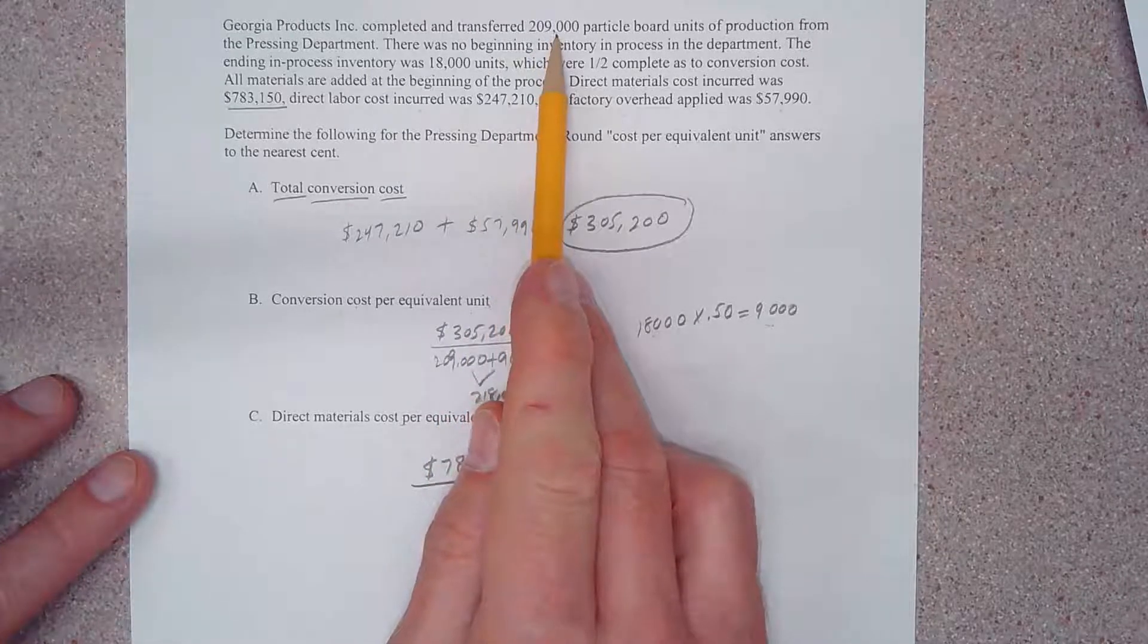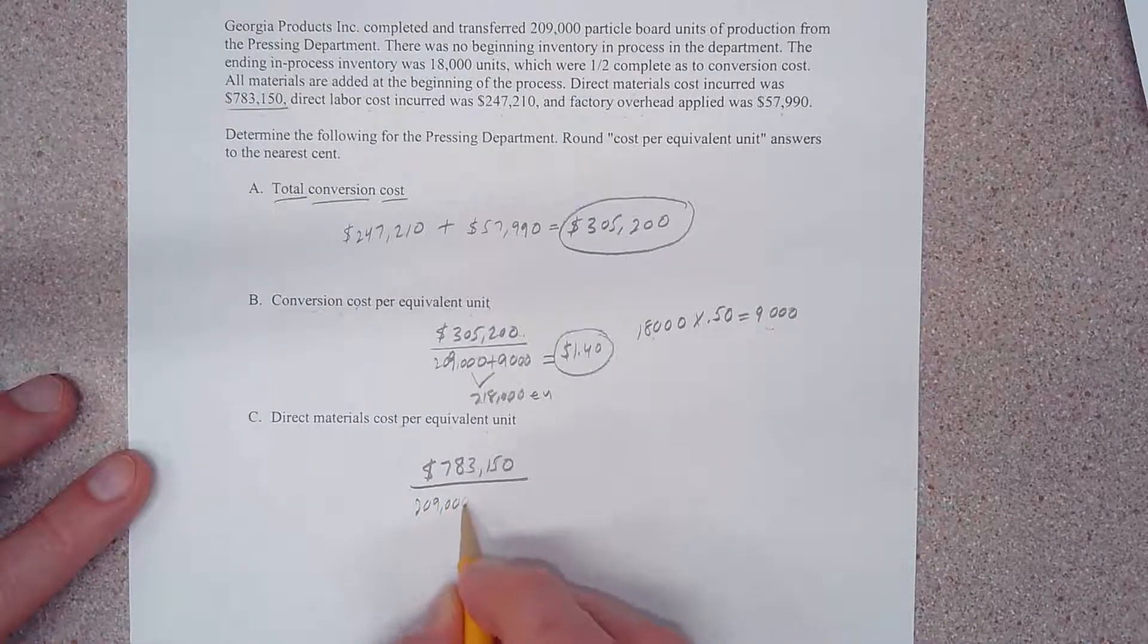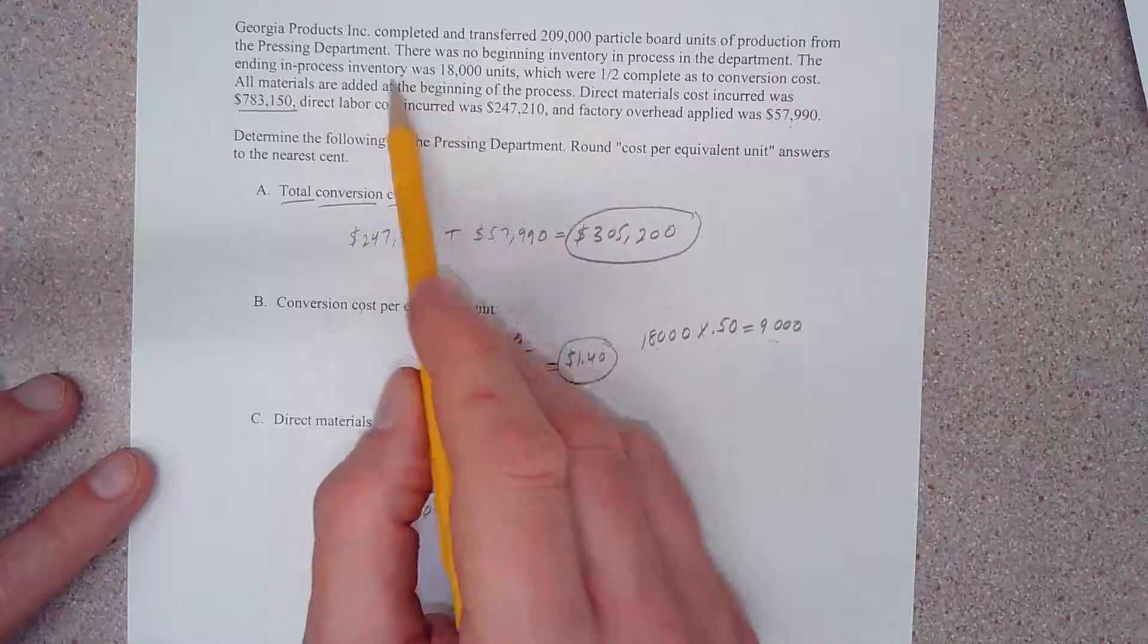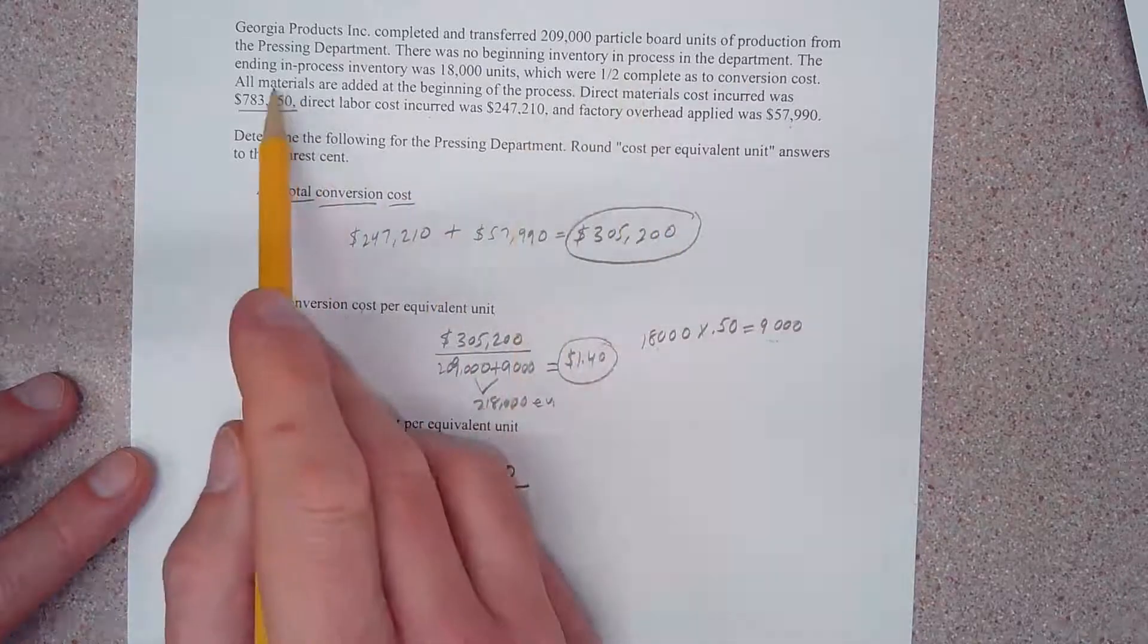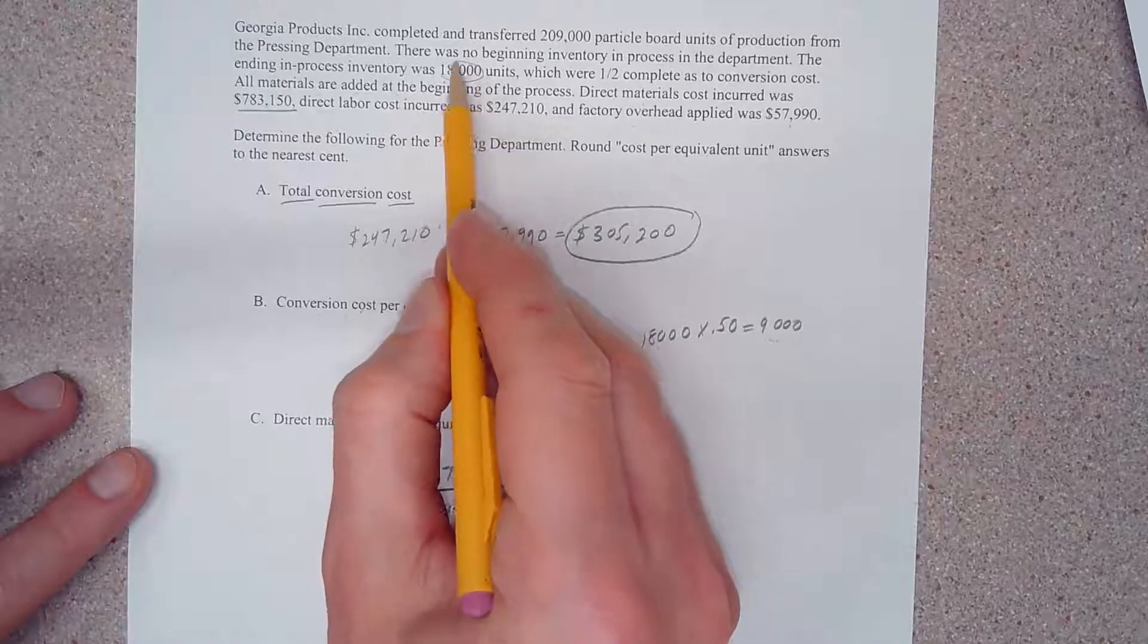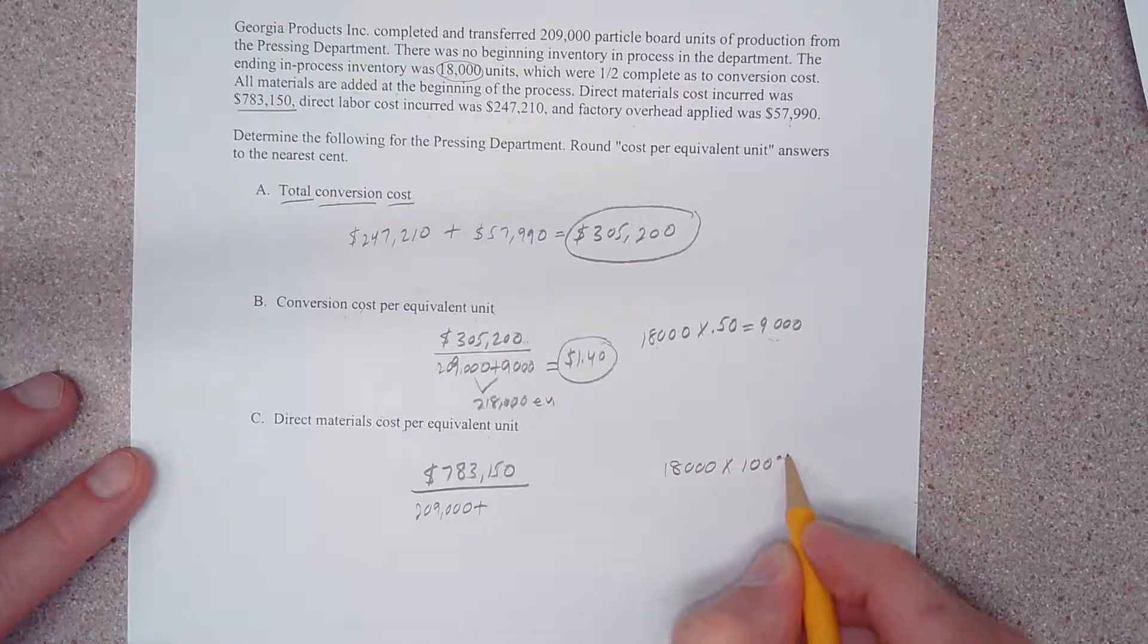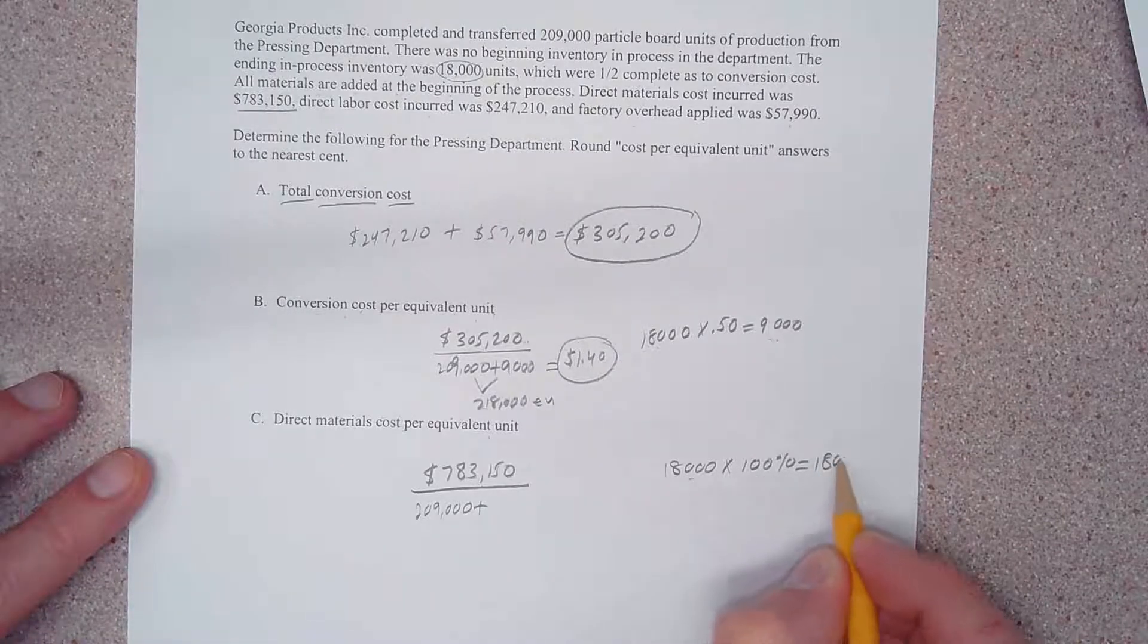Well, direct materials work a little bit differently. We still need this 209,000 units that were completed and transferred out. But what did we see about materials? Well, I don't know, let's see what it says. The ending working process inventory was 18,000 units which were half completed as to conversion costs. Ah, all materials are added at the beginning of the process. So these 18,000 units here, these 18,000 units that they reference are 100% complete as to materials. So 18,000 times 100 is 18,000.